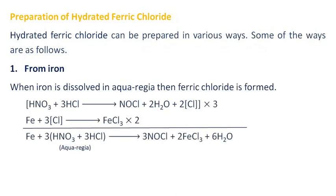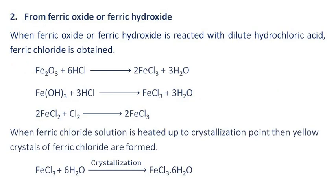Preparation of hydrated ferric chloride: Hydrated ferric chloride can be prepared in various ways. From iron: when iron is dissolved in aqua regia, ferric chloride is formed. From ferric oxide or ferric hydroxide: when ferric oxide or ferric hydroxide is reacted with dilute hydrochloric acid, ferric chloride is obtained. When ferric chloride solution is heated up to the crystallization point, yellow crystals of ferric chloride are formed.